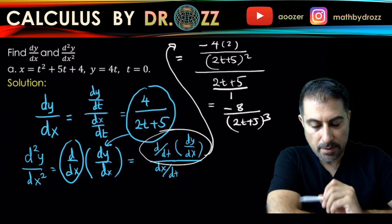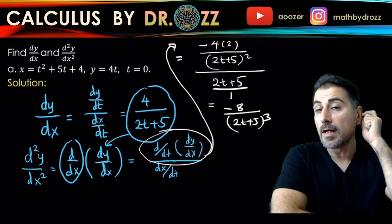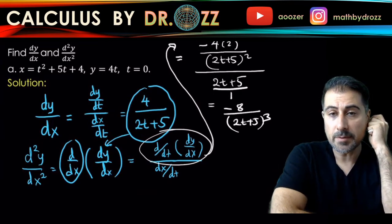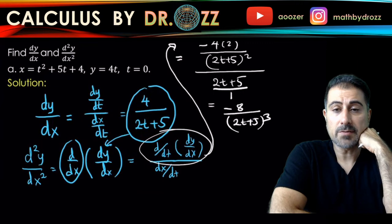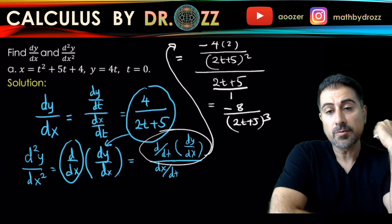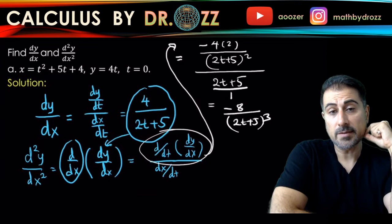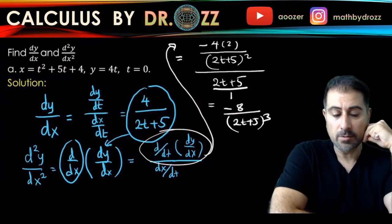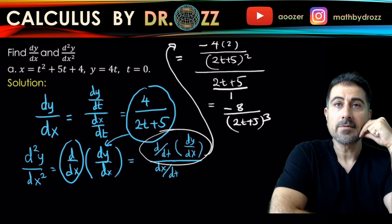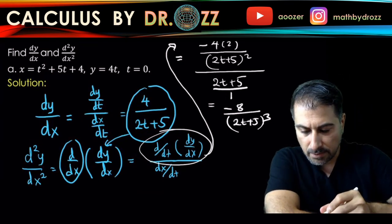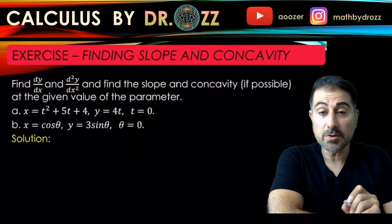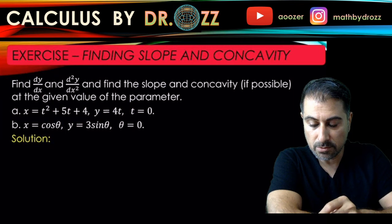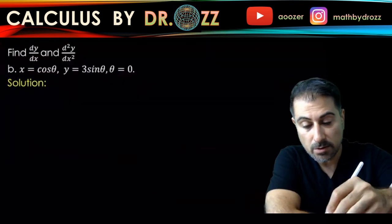And let's graph these parametric equations and see what kind of graph we have, because we have dy over dx 4 over 2t plus 5, that tells us about the slope of the tangent line, and d squared y over dx squared is telling us about the concavity of the graph, right? And in fact, in the question statement, before we graph, we want all of those to be evaluated at t equals 0. So let's go back and evaluate those at t equals 0.